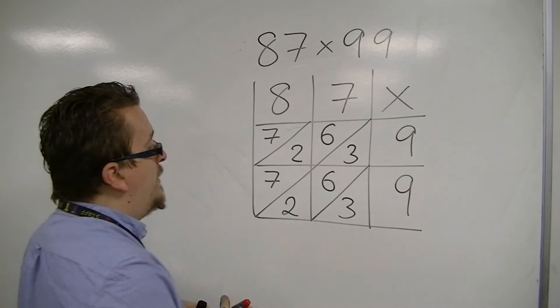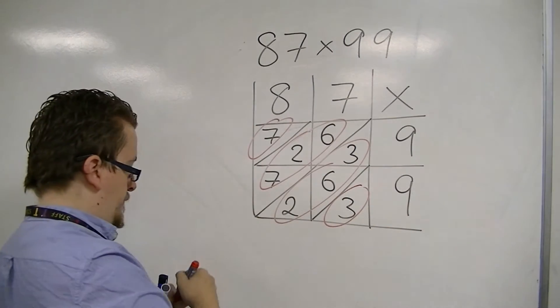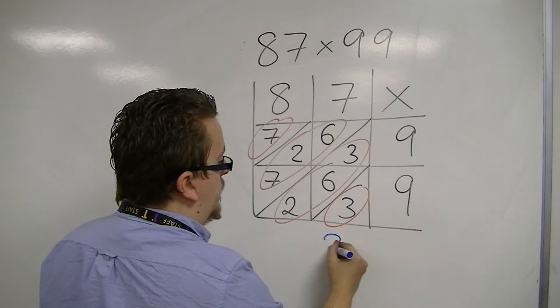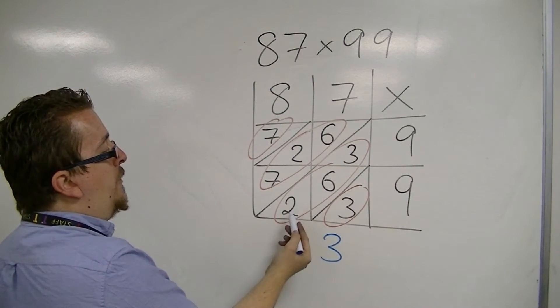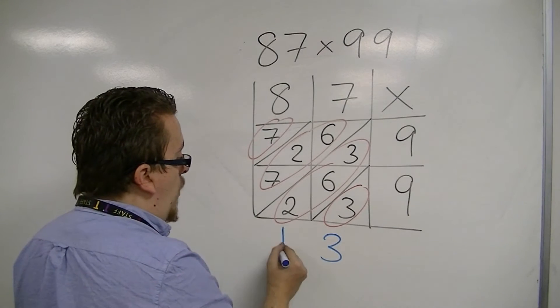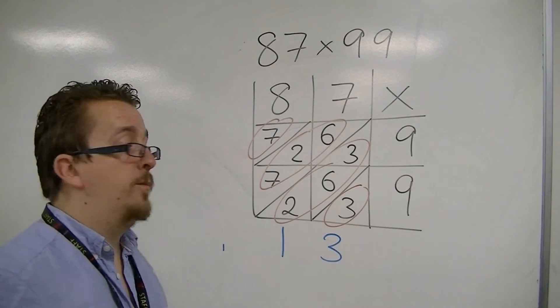We add up the diagonals. So, we have 3. 3 plus 6 plus 2 is 11. So, we write 1 and then carry the 1 over. Much like you would in any other kind of addition or multiplication.